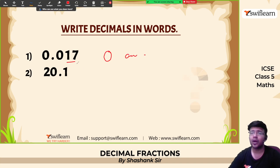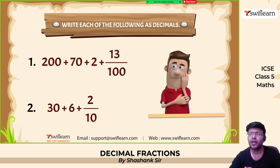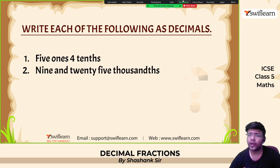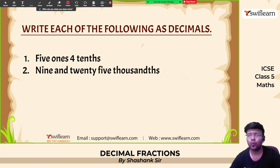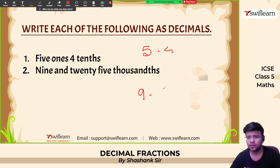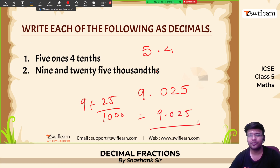Next: write decimal numbers in words. For example, 0.017 is 'zero and seventeen thousandths.' 20.1 is 'twenty and one tenth.' That is how we write in words. Now convert: five and one tenth is 5.4 — wait, five ones and four tenths is 5.4. Nine and twenty-five thousandths means 9 + 25/1000, which is 9.025.